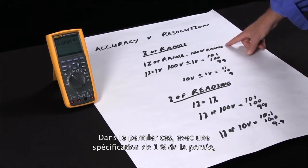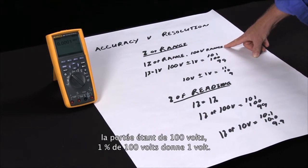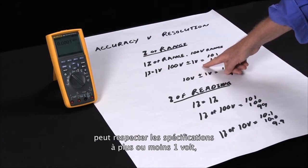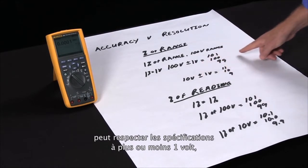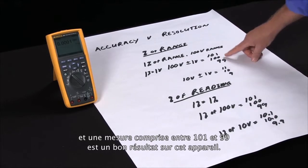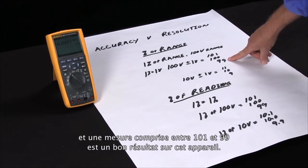For percent of range, if we have a one percent specification of range and we're on a hundred volt range, one percent of a hundred volts is one volt. So that means with a reading of a hundred volts that can be within specification at plus or minus one volt. So a reading between a hundred and one and ninety-nine is actually a good reading on this meter.